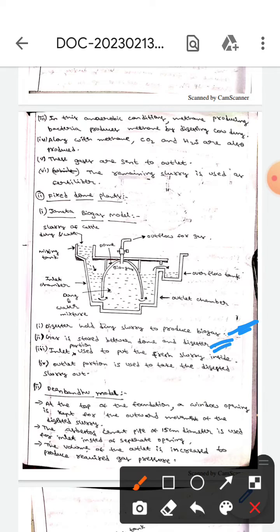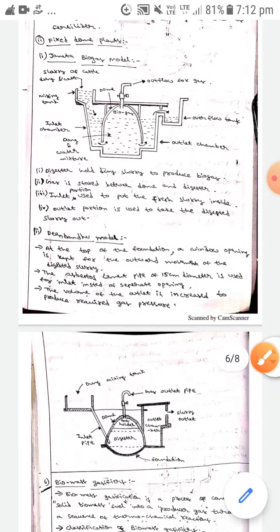this gas is stored between the dome and digester. The inlet portion is used to put the flush slurry inside, whereas the outlet portion is used to take the digester slurry out. The next one is